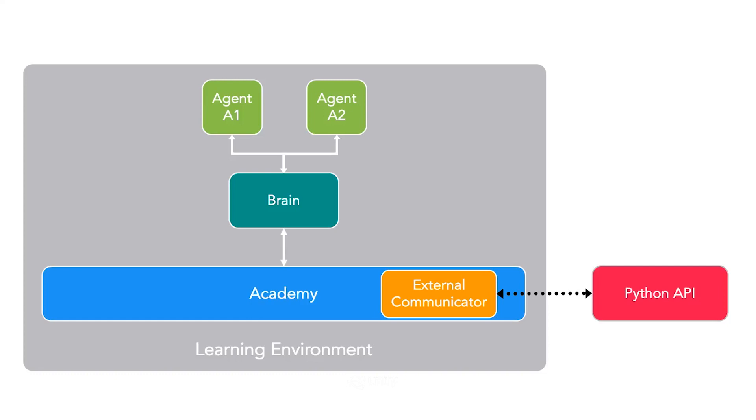At one level up from that, we have the brain. The brains are what actually make decisions, and these can be thought of as our neural networks.